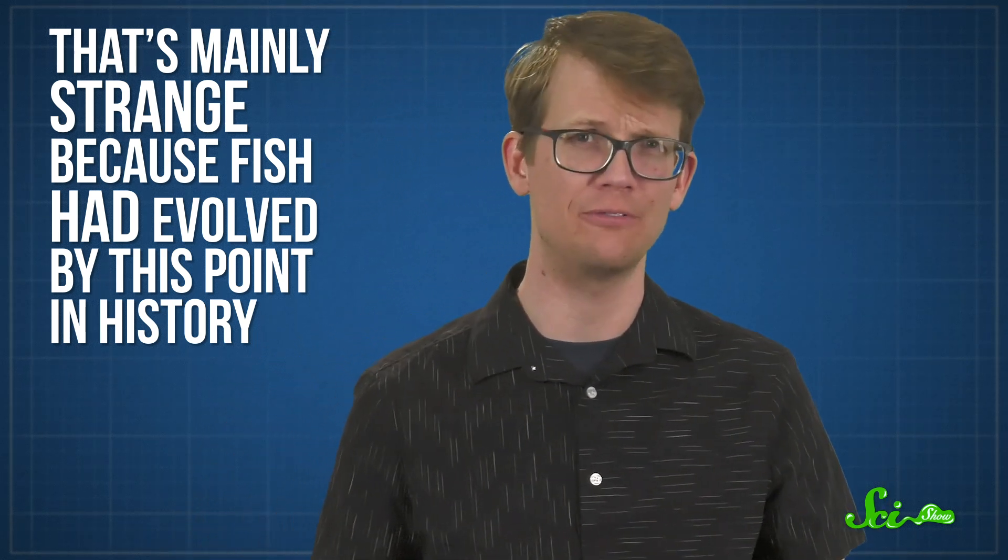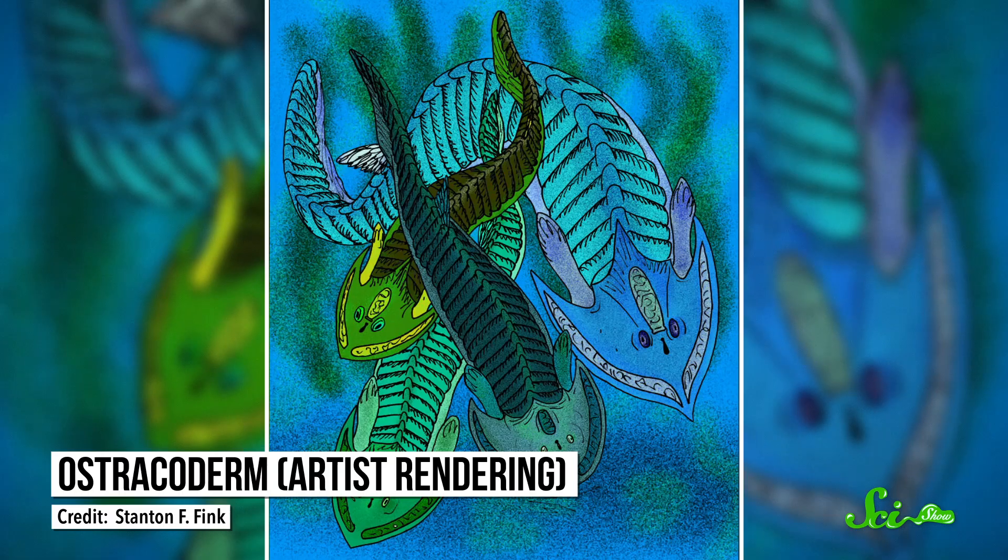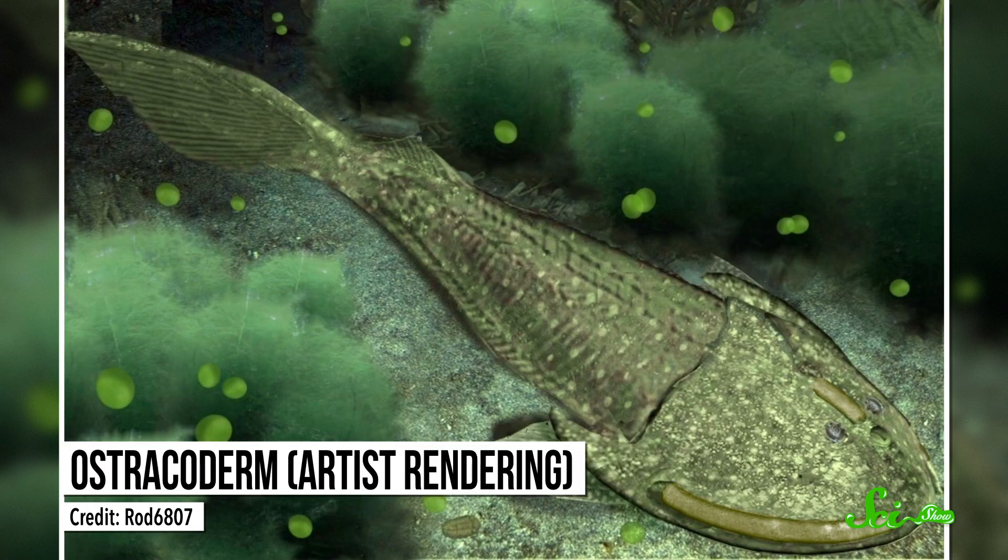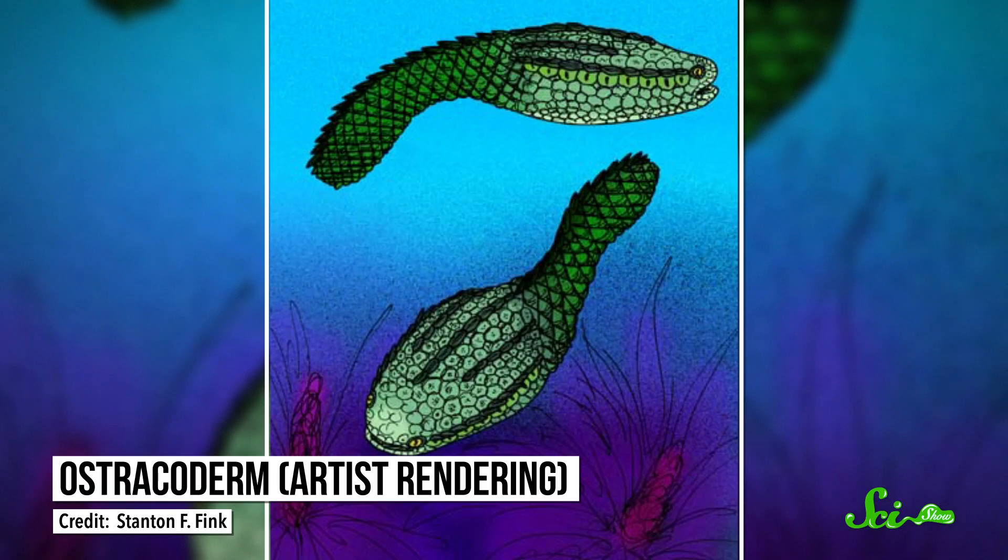Typical Ordovician fish were ostracoderms. Jawless and armored, they often had large, bony shields on their head, small scales, and a small, slit-like mouth. Overall, they probably looked more like an armor-plated tadpole than a salmon. But they did exist, just not around Cincinnati.